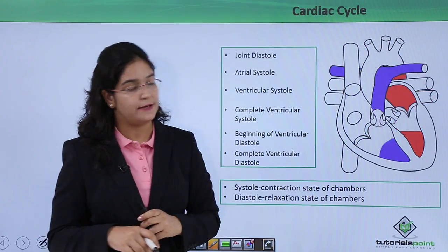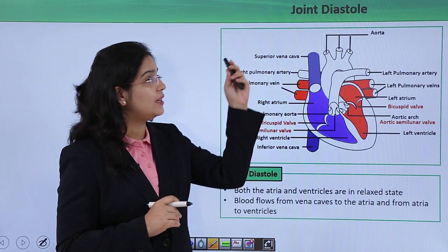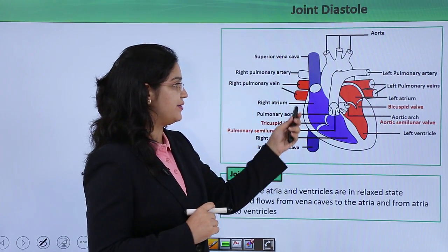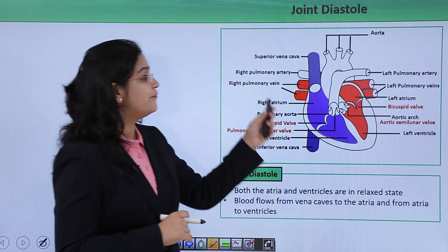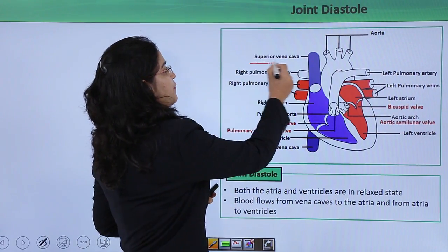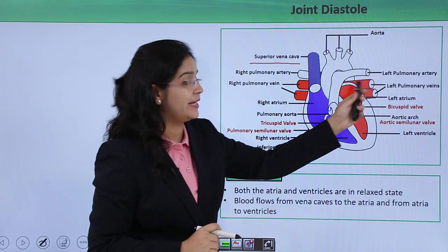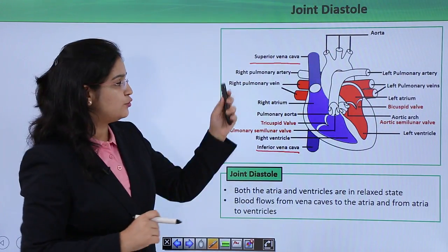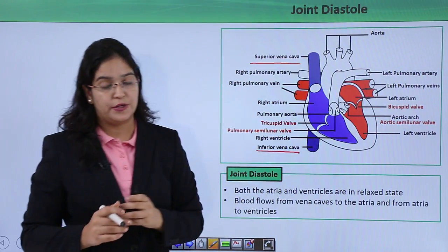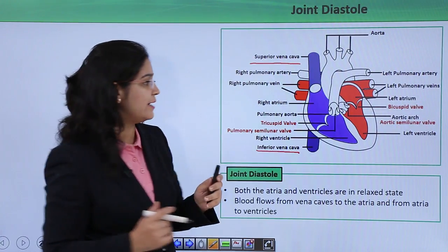Let's start with the joint diastole phase. Joint diastole is the phase when all the chambers are in a relaxed state. As all chambers — atria and ventricles — are in a relaxed phase, they get filled with blood. The right atrium gets filled from the superior vena cava and inferior vena cava. The left atrium gets filled from four pulmonary veins, two from the left side and two from the right side. Both ventricles also get filled through their respective atria as the tricuspid and bicuspid valves are open.